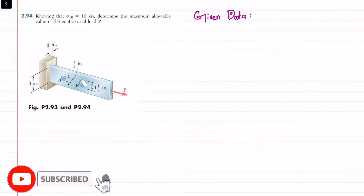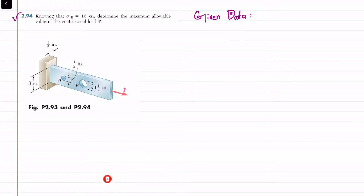Welcome back. Problem 2.94: knowing that the allowable stress is 16 ksi, determine the maximum allowable value of centric axial load. The maximum allowable stress is given as 16 ksi.